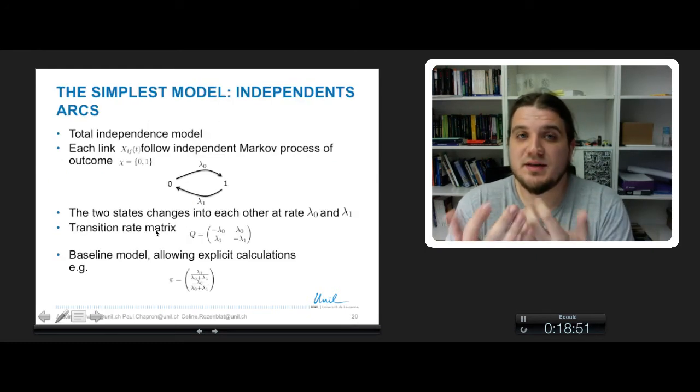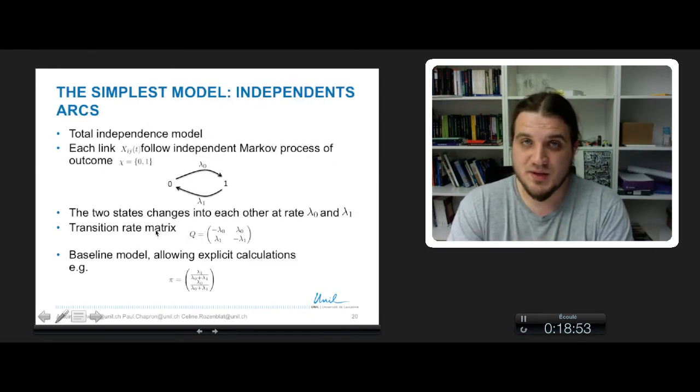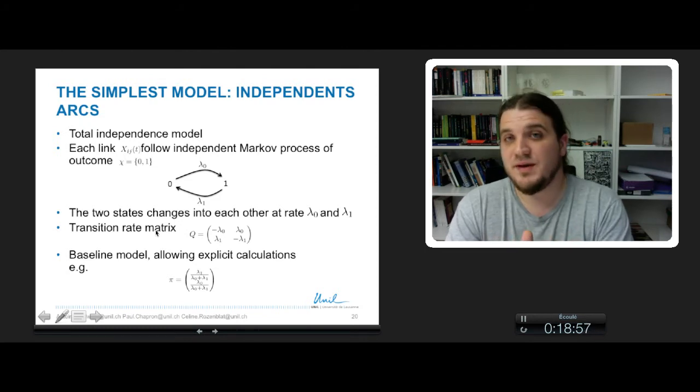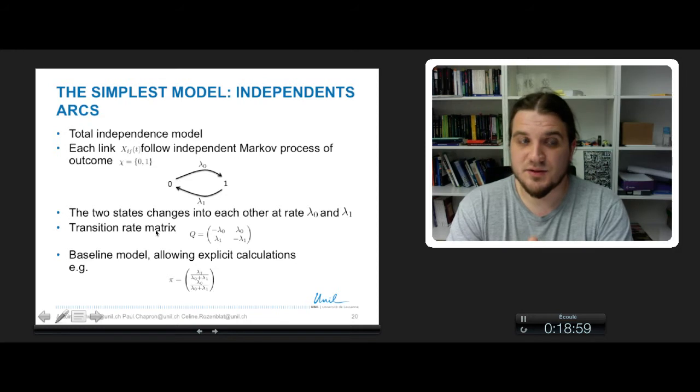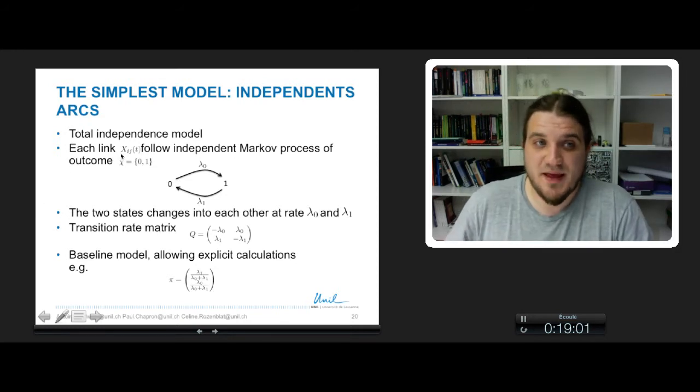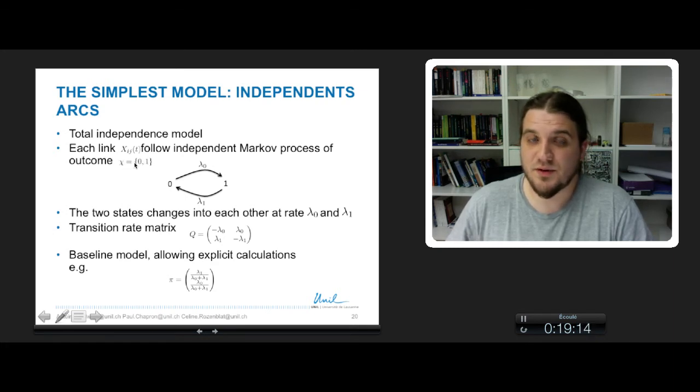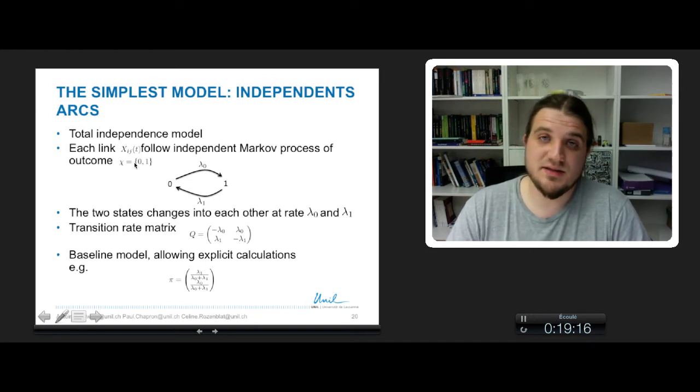The simplest model is the independent arcs model. It assumes a total independence of every possible link in the network. Each link xig at state t follows independent Markov process of outcome chi two states 0 and 1. For each link, it can be in state 0, no link, or in state 1, a link exists.